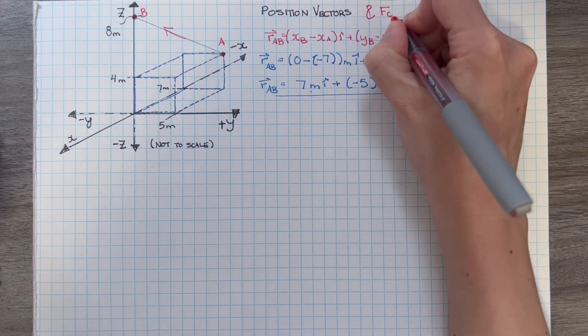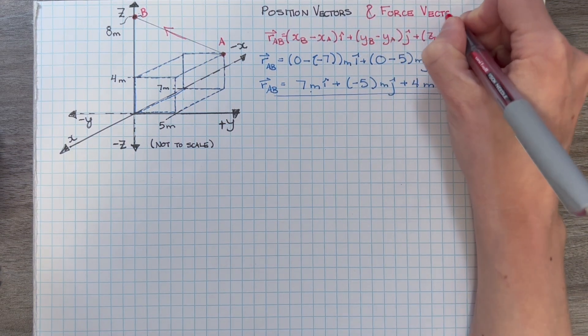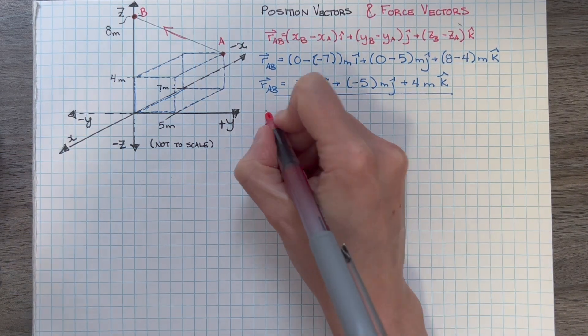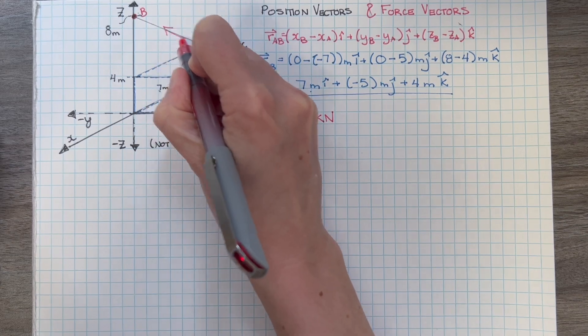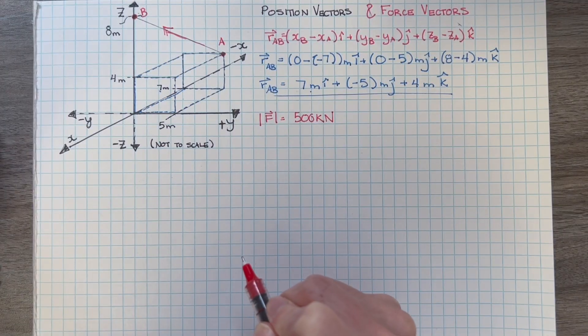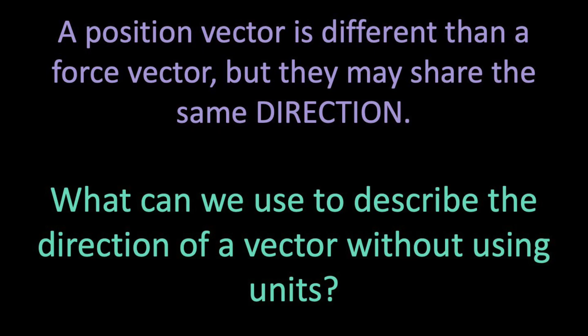Now, let's say we have a force of 500 kN acting in the same direction as our vector. What would our force vector be? The force vector is different than the position vector. The position vector is defined by our displacements in meters, whereas our force is in kN. But the two vectors do share the same direction.